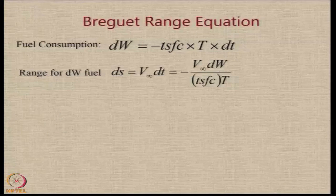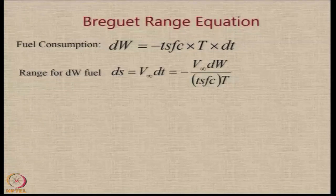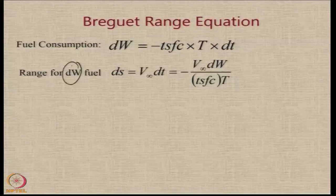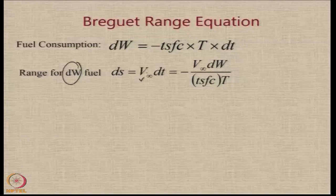And the distance travelled by the aircraft is actually going to be for a small amount of fuel DW, the distance travelled will be DS which will be its speed assumed to be constant in that small segment into the time.